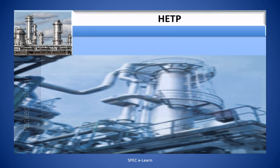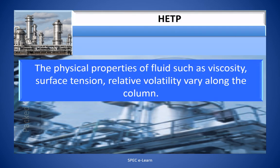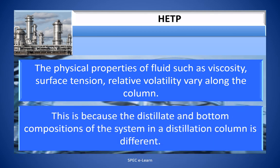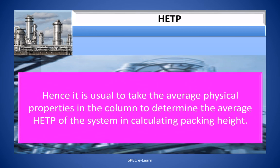The physical properties of the fluid — such as viscosity, surface tension, and relative volatility — vary along the column, because the distillate and bottom compositions in a distillation column are different. Hence, it is usual to take average physical properties in the column to determine the average HETP of the system when calculating the packing height.